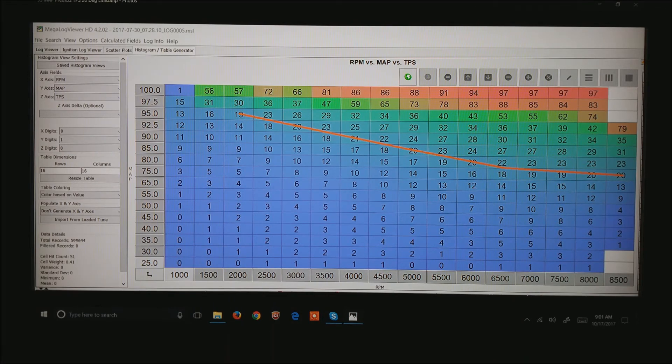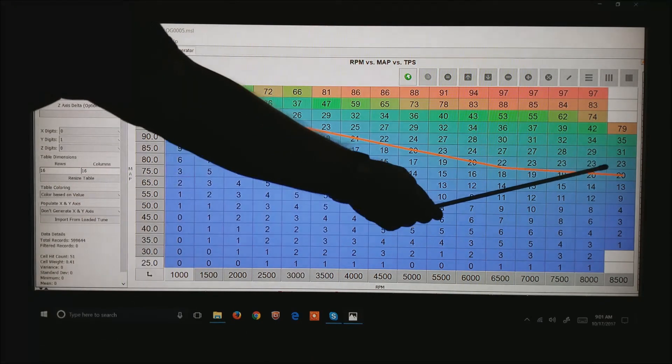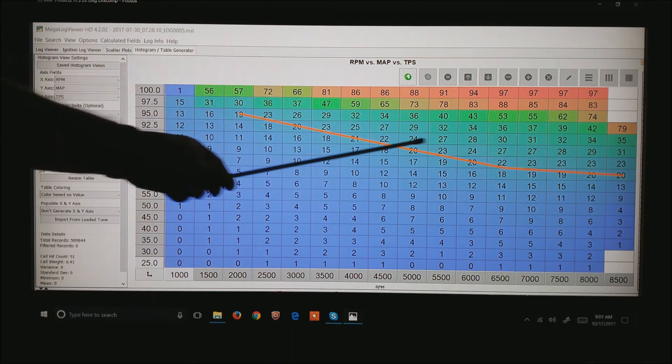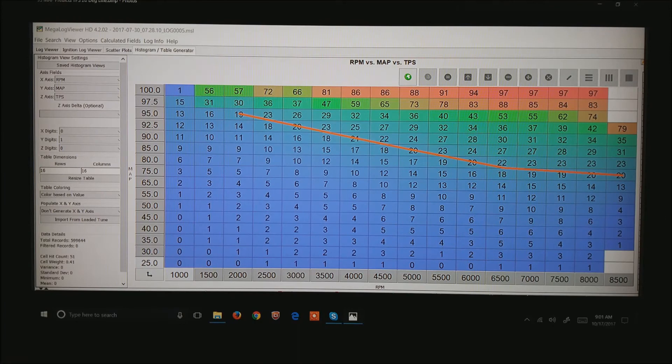Here again, we've generated a map from the same motor. And this happens to be manifold air pressure and RPM. And in the center is we have the average throttle position sensor that it took to get to this area of the map. If you notice, the red line is approximately where 20 degrees throttle is.